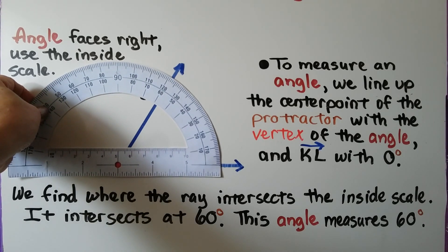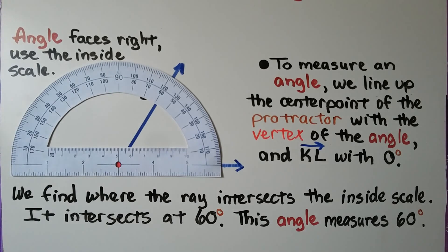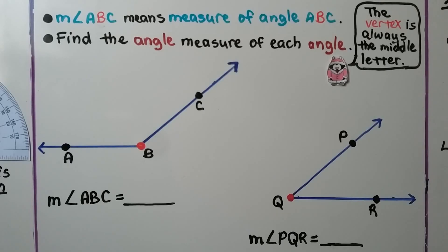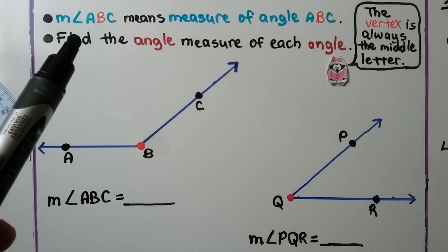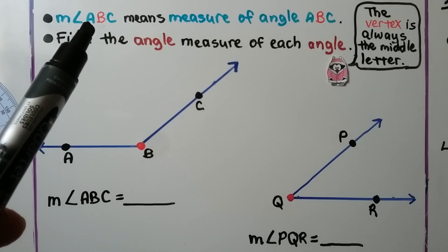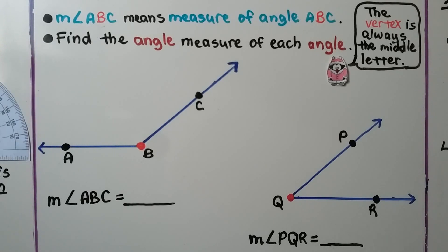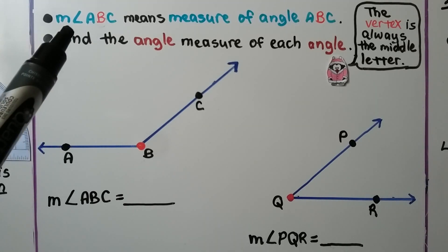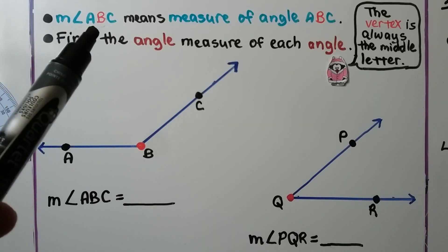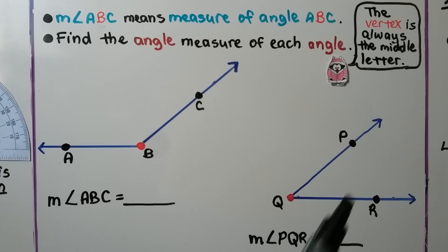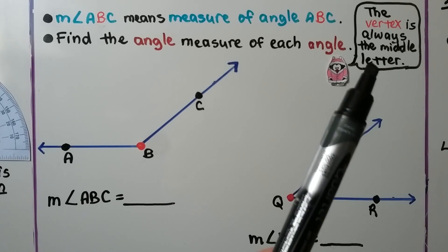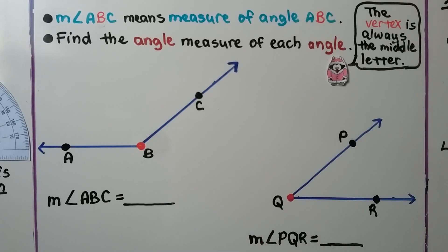When we see the little m with the angle symbol followed by letters — for example, m∠ABC — it means the measure of angle ABC. Remember, the vertex is always the middle letter.